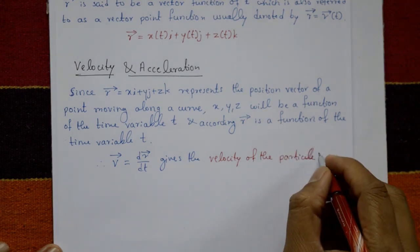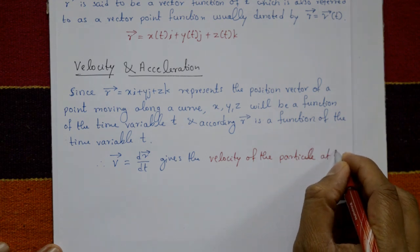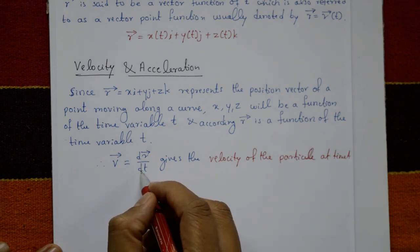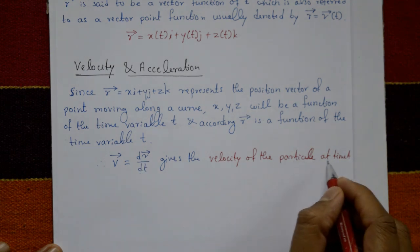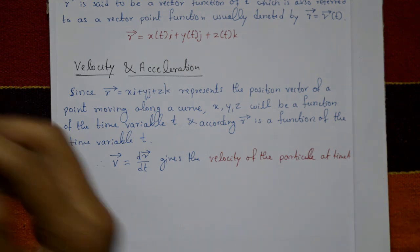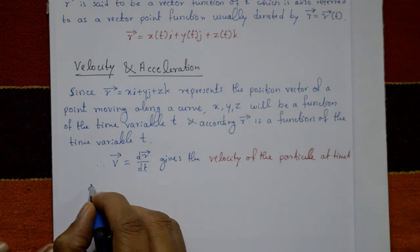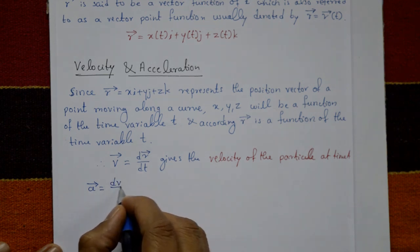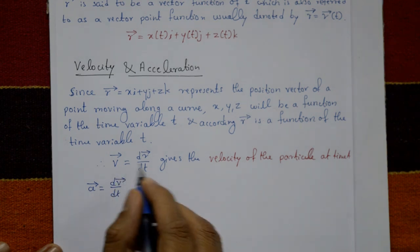v = dr/dt is the velocity of the particle. Now a, the acceleration, is dv/dt, which means a = d²r/dt².